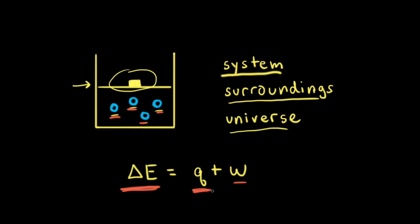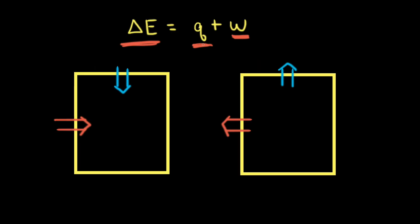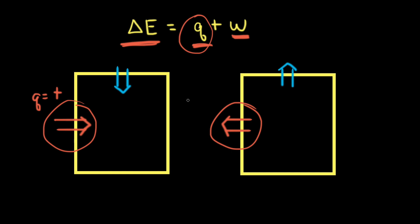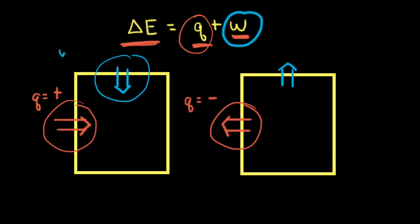Q refers to the heat that's transferred to or from the system, and W refers to the work done on or by the system. For sign conventions: when heat flows into the system from the surroundings, Q is positive; when heat flows out of the system into the surroundings, Q is negative. For work, when work is done on the system by the surroundings, work is positive; but if work is done by the system on the surroundings, work is negative.